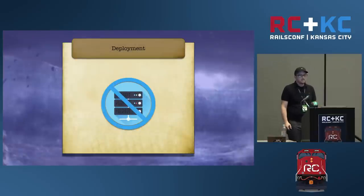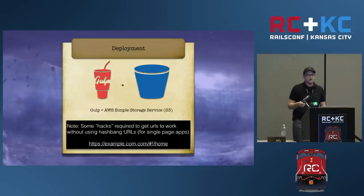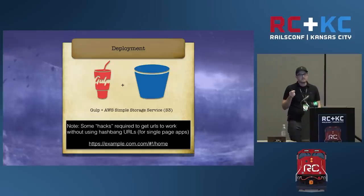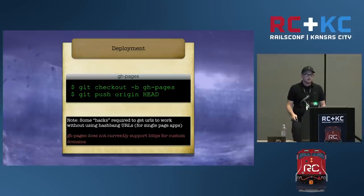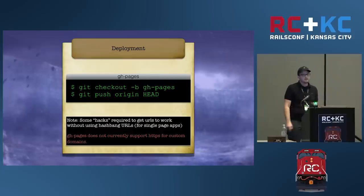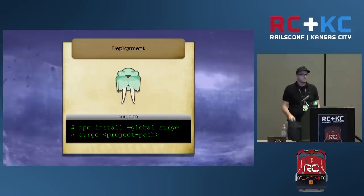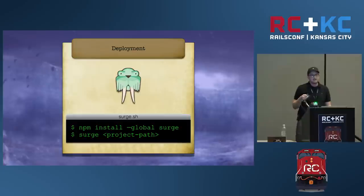Let's talk about how we deploy our client code. In this new client-side world, we no longer want to have to worry about servers. One way to guarantee your front-end will basically never go down is to use an AWS S3 bucket to serve your front-end, paired with something like Gulp to script up the deployment. The only downside is that there are some hacks required to get it to work without using hashbang URLs. You can also use ghpages — just push your repo to the ghpages branch and it will automatically be hosted for you, though it has the same hashbang URL problem and doesn't support SSL for custom domains. Personally, I recommend surge.sh, which allows you to push your client-side code via the command line and addresses both the SSL issue and the hashbang issue.